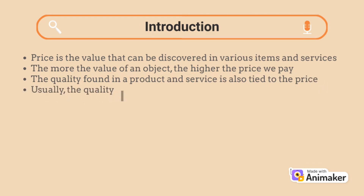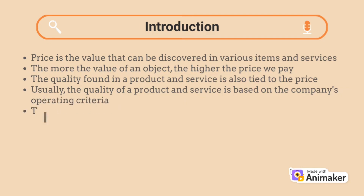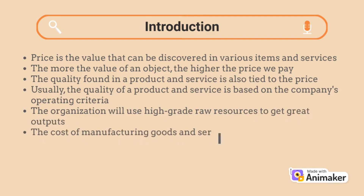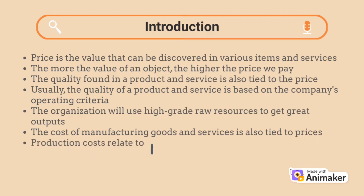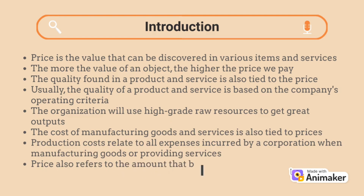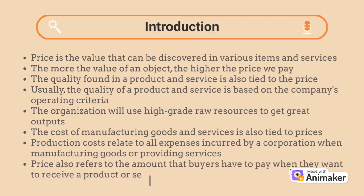Usually, the quality of a product and service is based on the company's operating criteria. The organization will use high-grade raw resources to get great outputs. The cost of manufacturing goods and services is also tied to prices. Production costs relate to all expenses incurred by a corporation when manufacturing or providing goods or services. Price also refers to the amount that buyers have to pay when they want to receive a product or service.